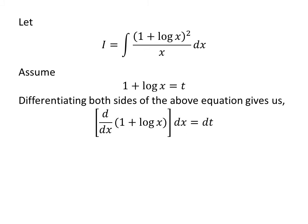Let us find the value of the differential of t. Taking the differential of both sides of the above equation gives us the derivative of 1 plus natural log of x with respect to x times the differential of x is equal to the differential of t. We know the derivative of constant 1 is 0 and the derivative of natural log of x is 1 upon x.